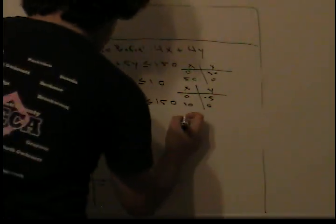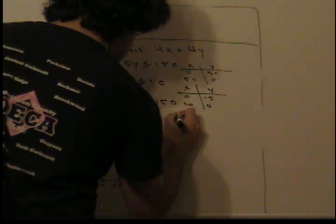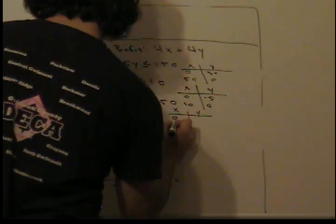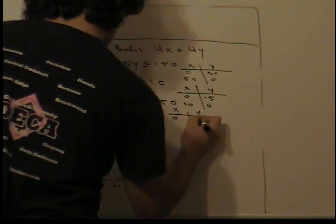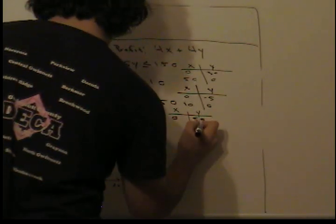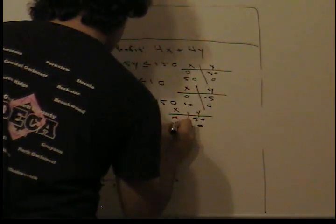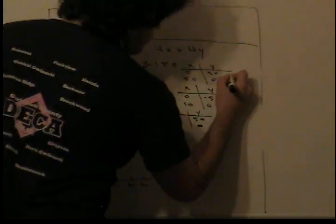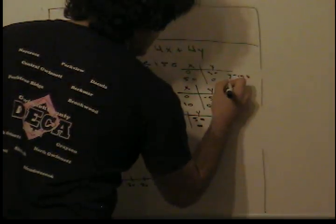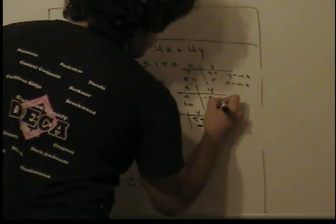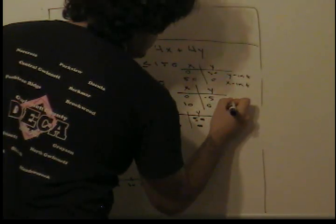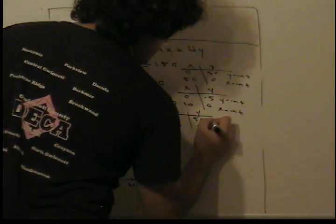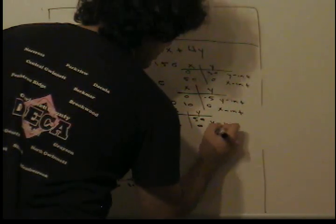For the final constraint, when x is 0, y is 50, and when y is 0, x is 30. So as you can see, I'm just finding the x and y intercepts — those are the y intercepts and x intercepts for each constraint.